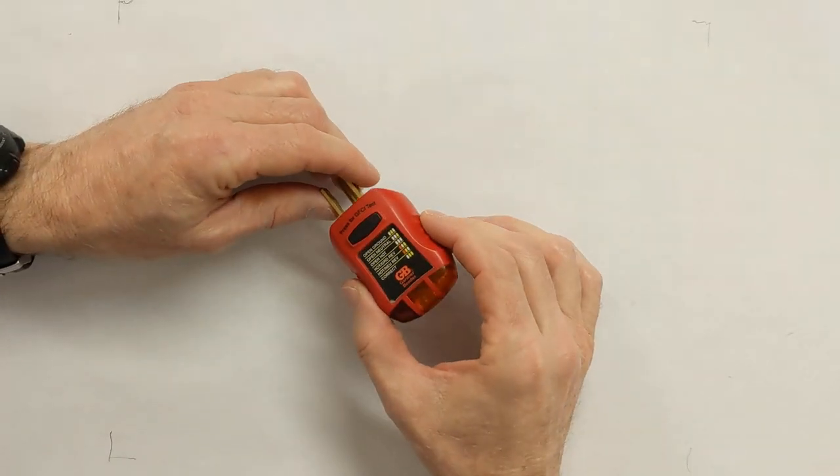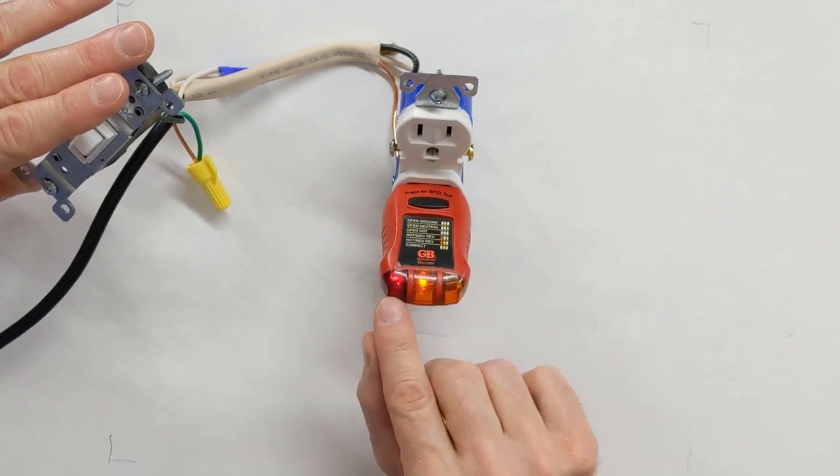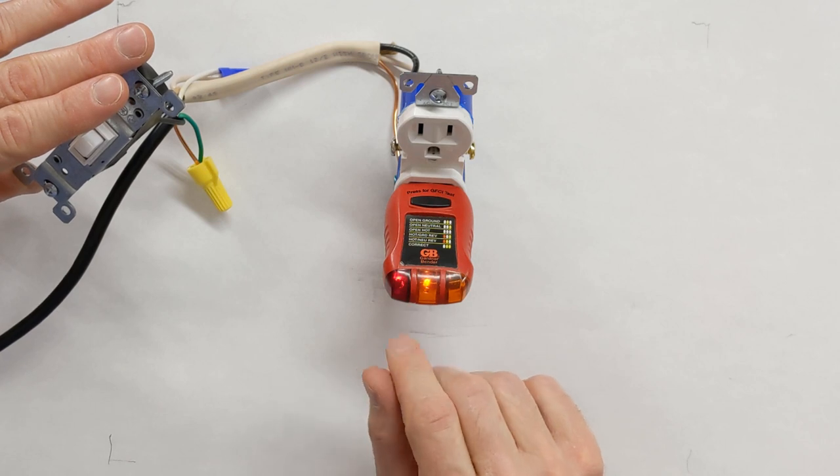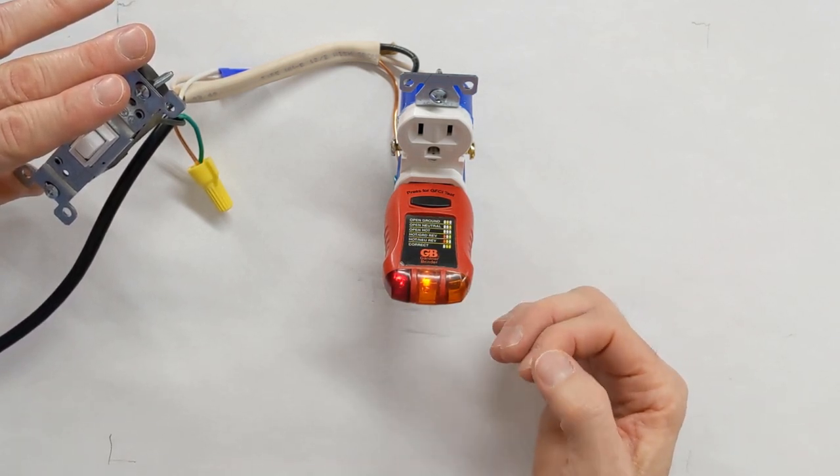As a home inspector, I find reverse polarity by plugging an outlet tester like this one into an outlet. The outlet tester will show me most of the problematic conditions of an electrical outlet. Here's what reverse polarity looks like when the tester is plugged into an outlet. The red light and the center yellow light are lit. Note that other testers may show different lighting configurations when they're used.